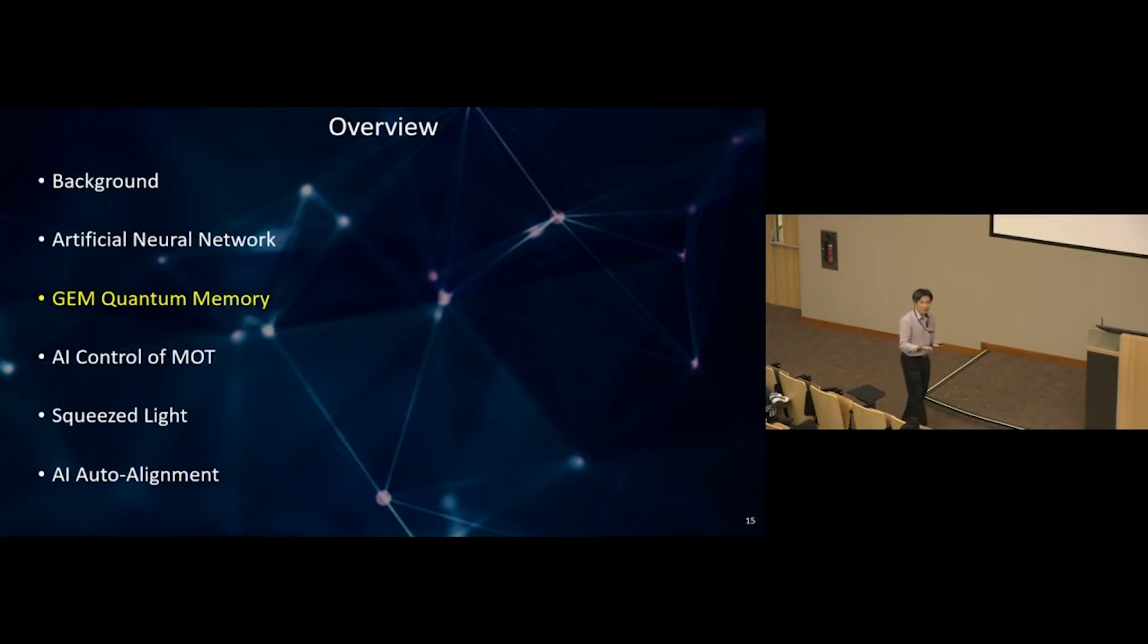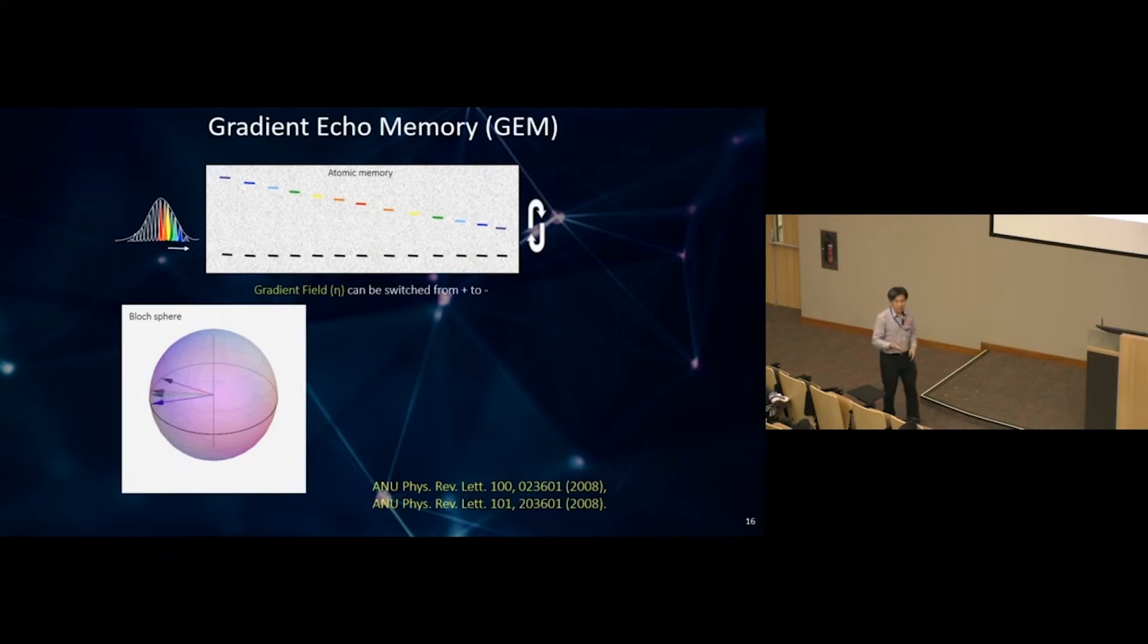Now we look at gradient echo memory. A quantum memory is a device where you can take an optical state of light, map it onto an atomic ensemble to keep it around rather than flying at the speed of light. Then a time t later, you can read out and synchronize with a delayed pulse.